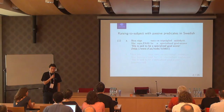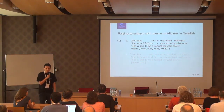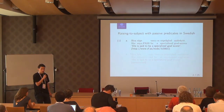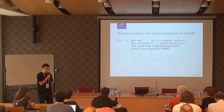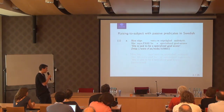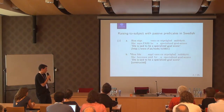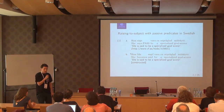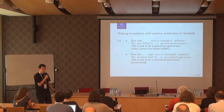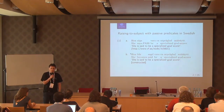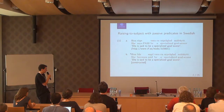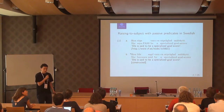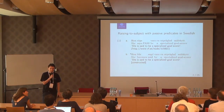In Swedish, just as in Danish and Norwegian, we have two different passive constructions: a morphological passive using the suffix -s, and a periphrastic passive using an auxiliary and a past participle — here the auxiliary 'bliva.' Interestingly, this particular construction — the raising-to-subject construction — is only possible with the morphological passive and not with the periphrastic passive. And that is the same in Danish and Norwegian.